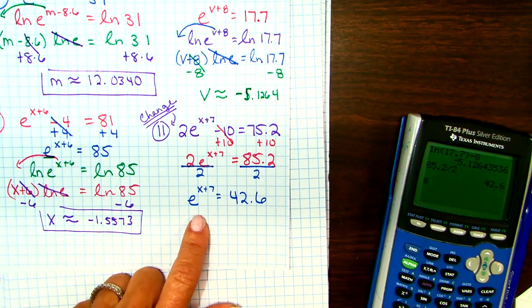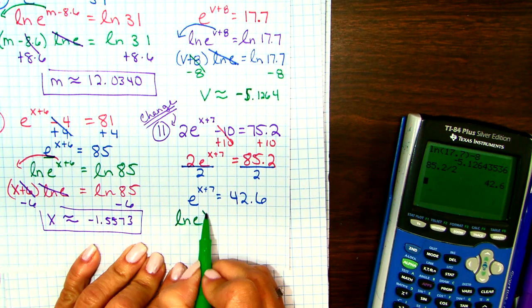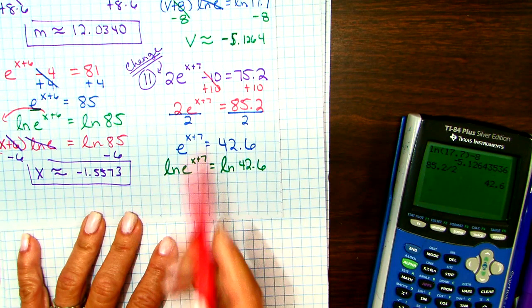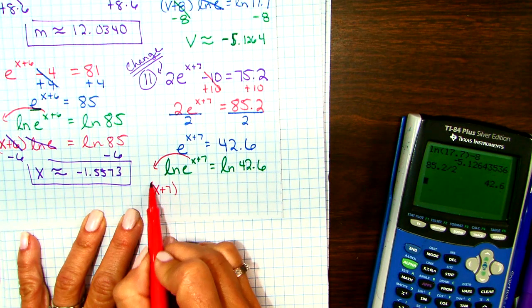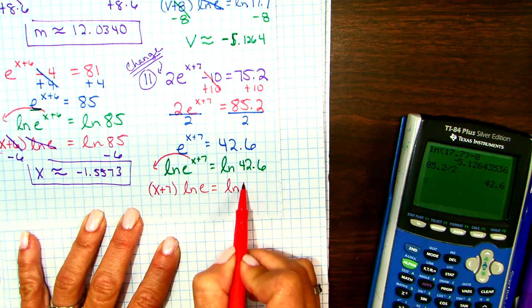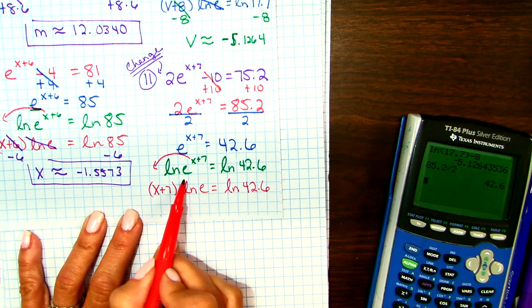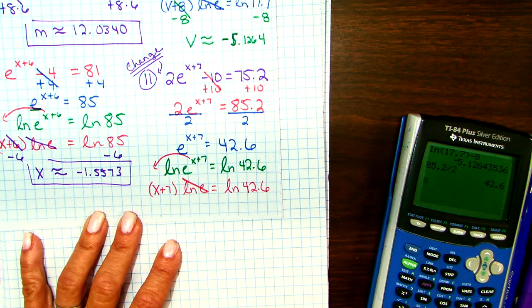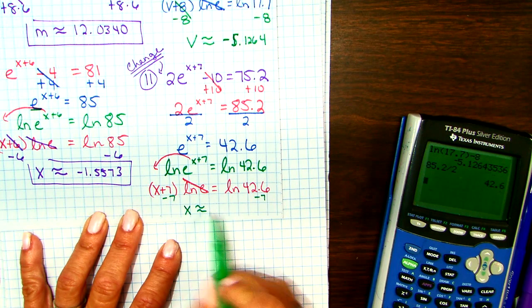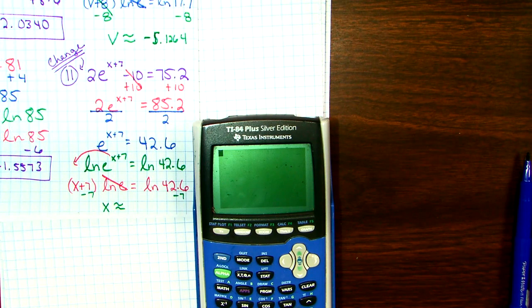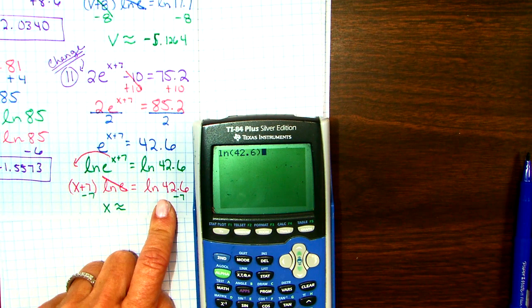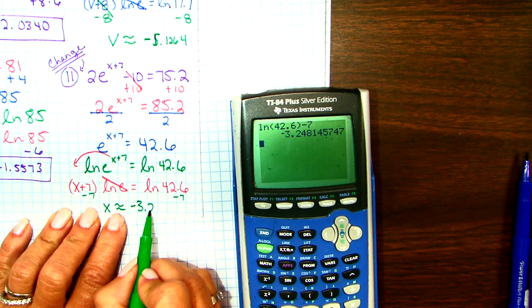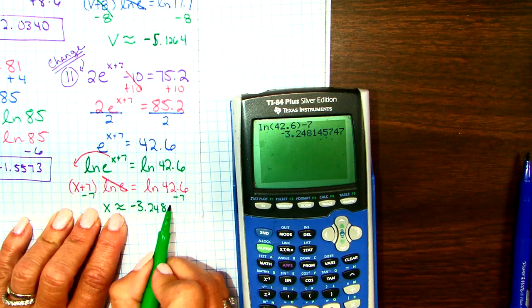So we had to do these two steps before we could even get to the point where we were, where we started in 7 and 8. So now that the E is by itself, we will give both sides a natural log. Bring that power on there. Natural log E is just 1. So we have X plus 7 equals natural log of 42.6. So we would subtract 7 from both sides. So let's put this in our calculator. So I have natural log of 42.6, close my parentheses, minus 7. Round to 4 places. Negative 3.248 of 4 is the boss of the 1, and it tells it to stay the same.